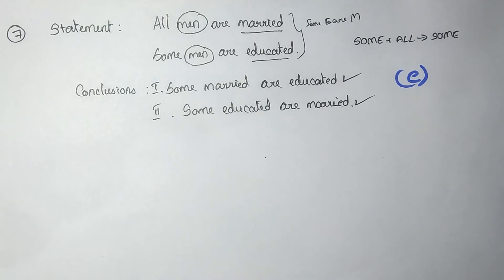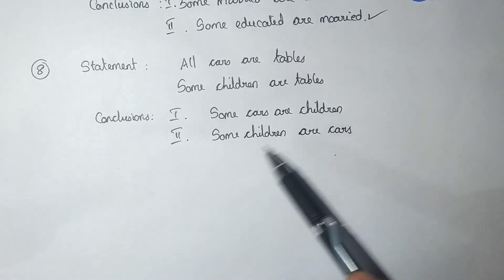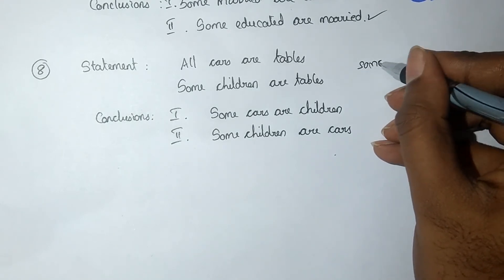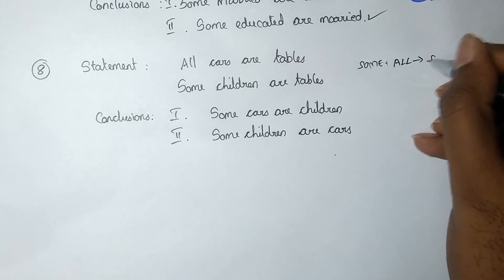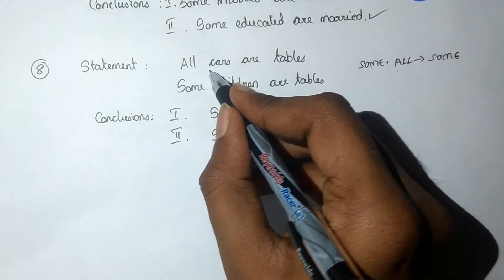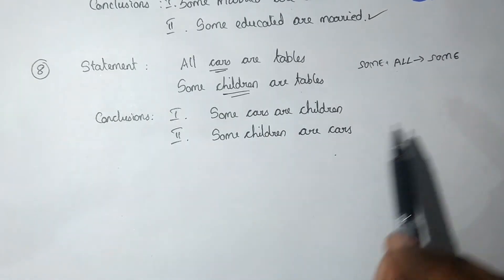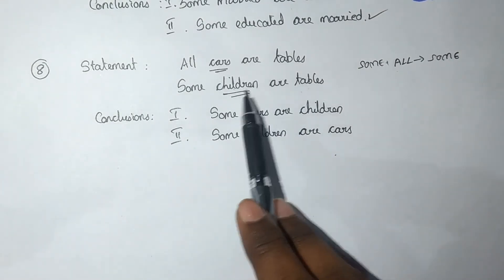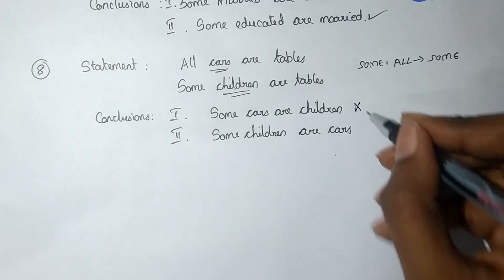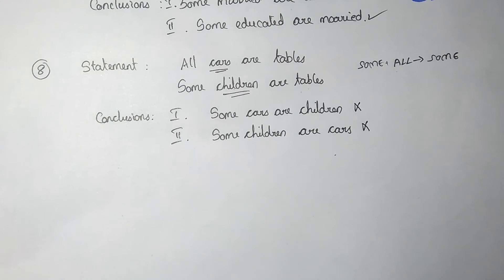Statement: All cars are tables. Some children are tables. Conclusion 1: Some cars are children. Conclusion 2: Some children are cars. There is no valid combination rule that can be applied here — the middle term 'tables' does not allow rearrangement. So neither conclusion 1 nor conclusion 2 follows. The answer is option D.